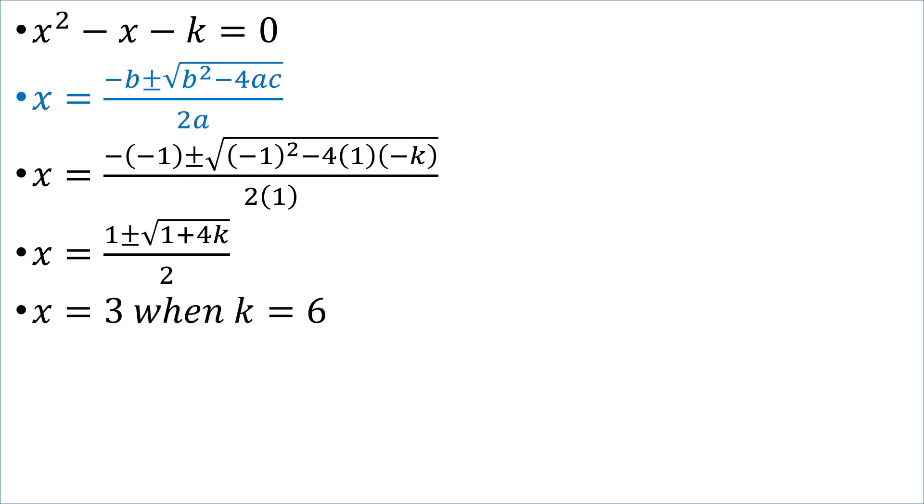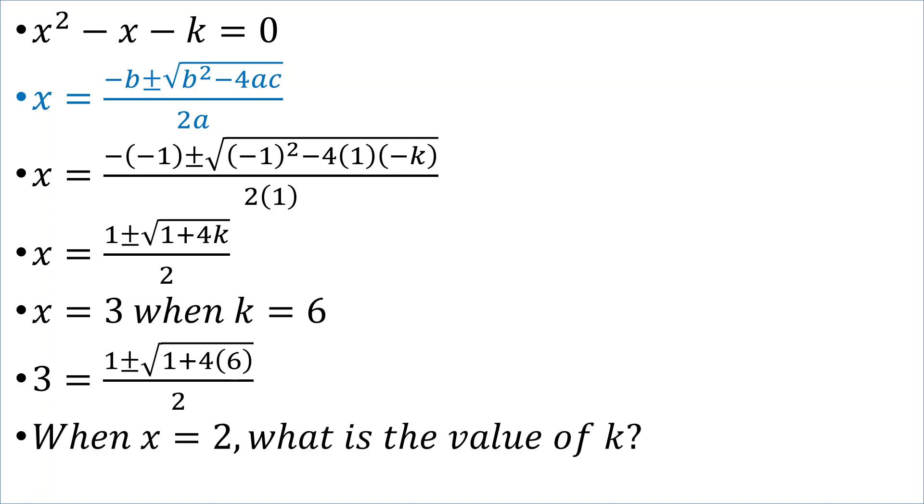Now, when x was equal to 3, we had that k was 6, which was our original problem. Right? And, we can verify and see that 3 is indeed equal to 1 plus or minus the square root of 1 plus 4 times 6 all over 2. But, what will be the value of k when x is 2? Let's see if we can determine that.